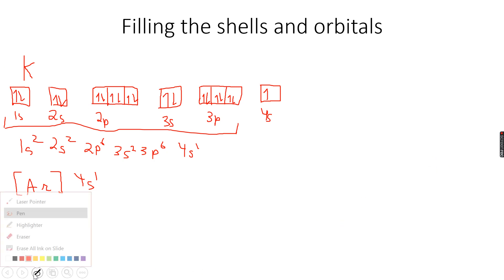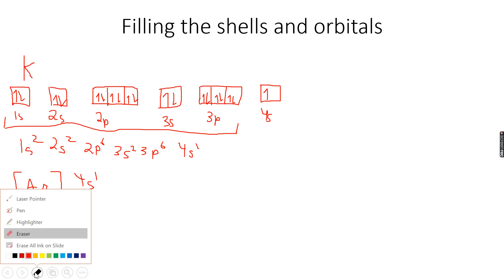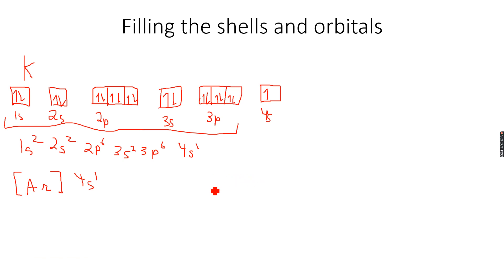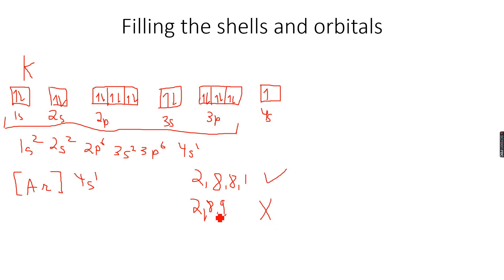The conventional electronic configuration of potassium is 2, 8, 8, 1. When you did your IGCSEs you might have thought the third shell can hold 9 electrons, but actually the third shell can hold a total of 18 electrons, because 2n² = 2×3² = 18. So why is it 2,8,8,1 and not 2,8,9? Because in the first shell we have 2, in the second shell we have 8, in the third shell we have 8, and that last electron is not in the third shell — it is in the fourth shell.